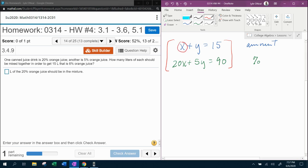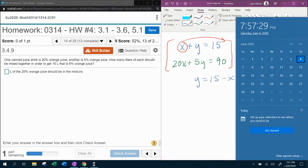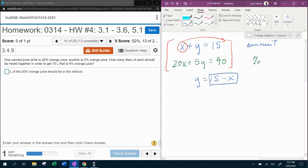So I'm going to take this first equation and move the X over. And that's going to give me Y equals 15 minus X. And then I'm going to know that Y is 15 minus X. And so in the second equation, I can replace Y with what it's equal to. We're going to use substitution. So this second equation is going to become 20X plus 5 times 15 minus X, again replacing the Y with what it's equal to, equals 90.